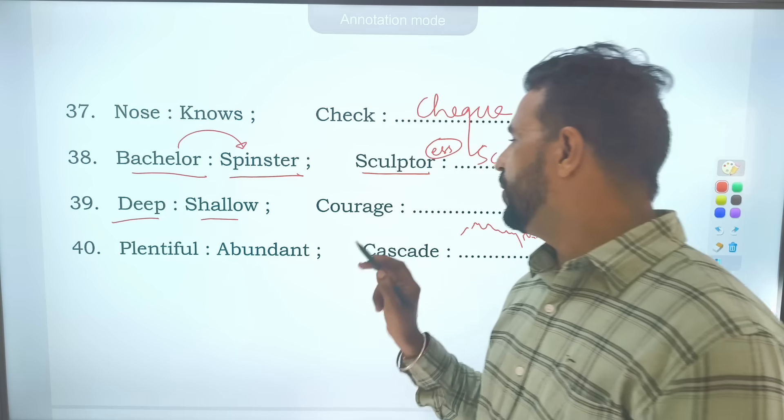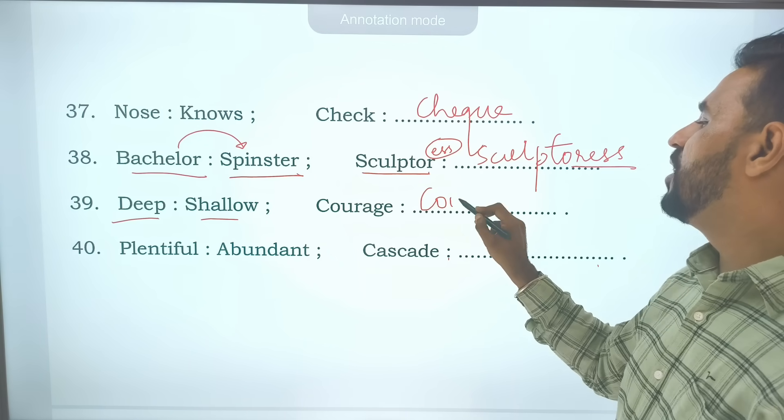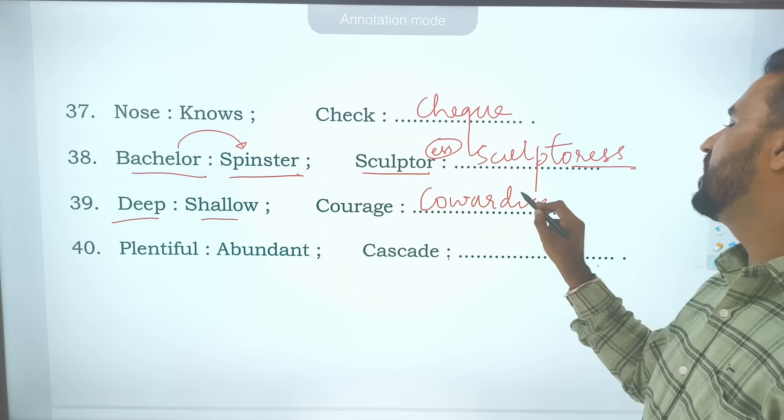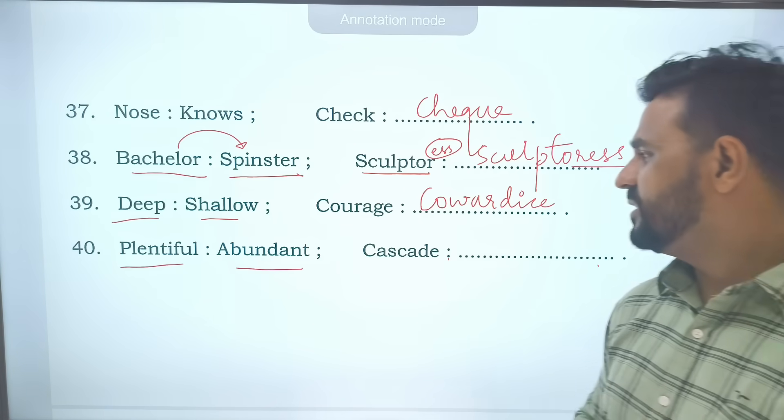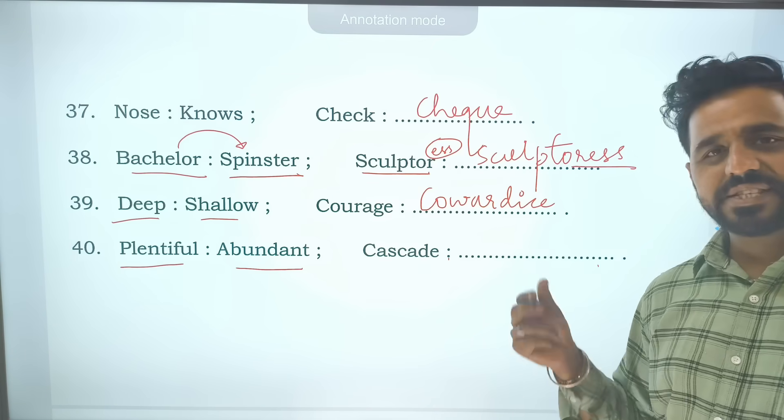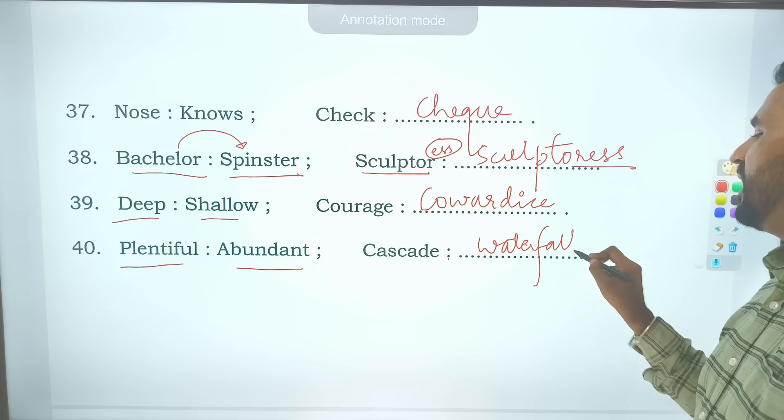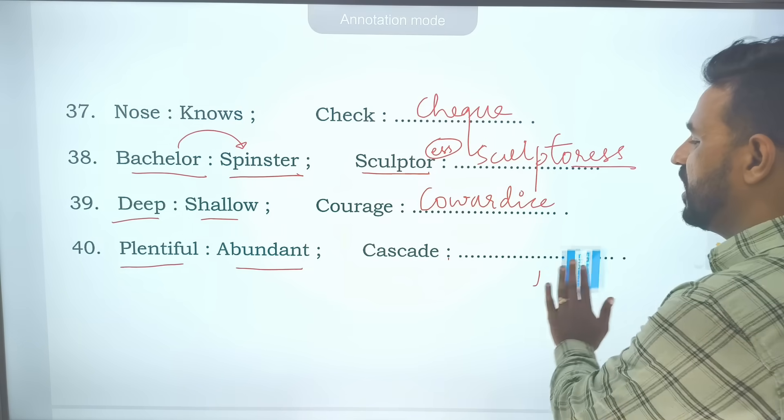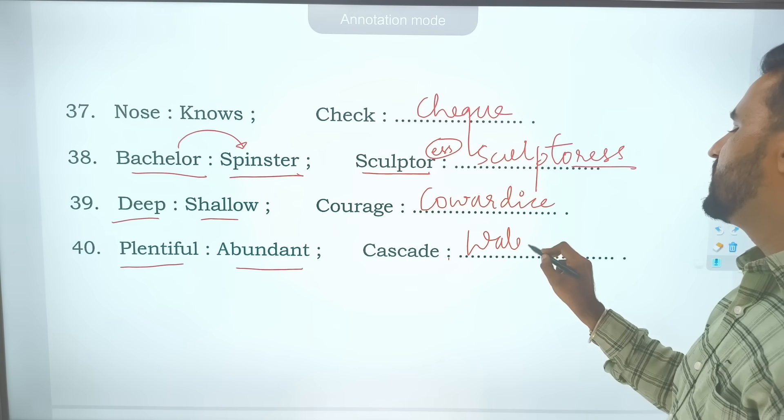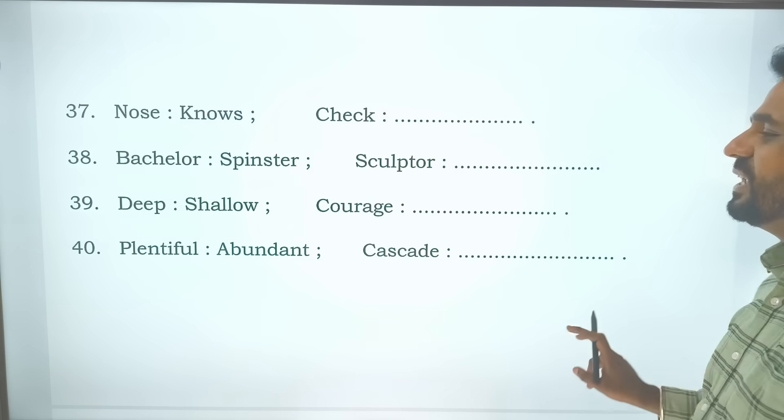Deep, opposite is shallow. Courage - the person who is having more courage to do. Then opposite of courage is cowardice. Plentiful meaning is abundant. Then cascade means waterfall. So Dala and Air are like cascades, that means they are like the waterfall. What is the meaning of cascade? It is waterfall.